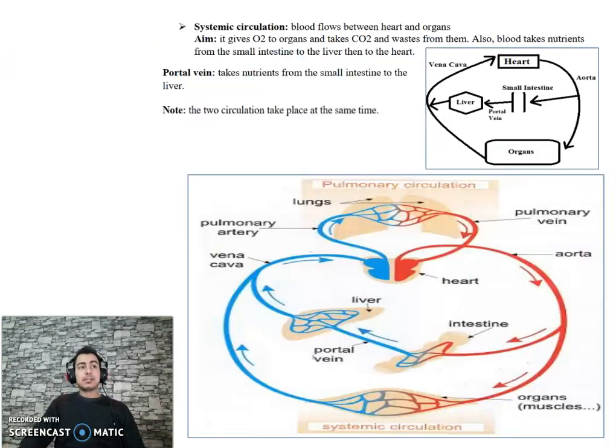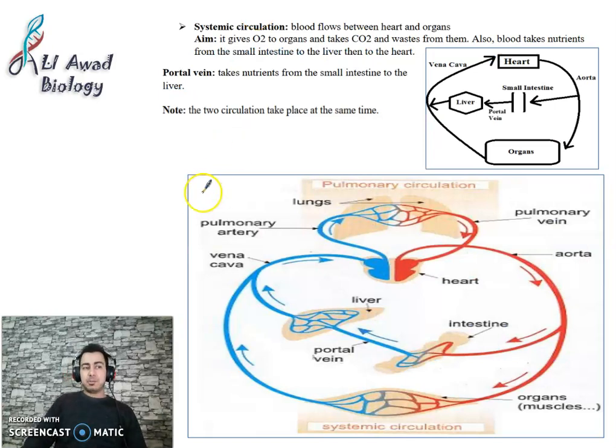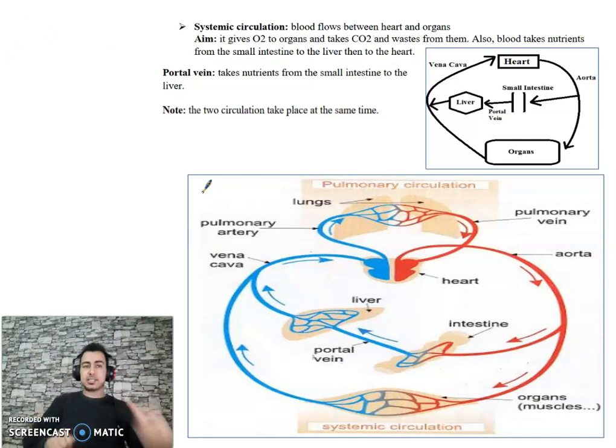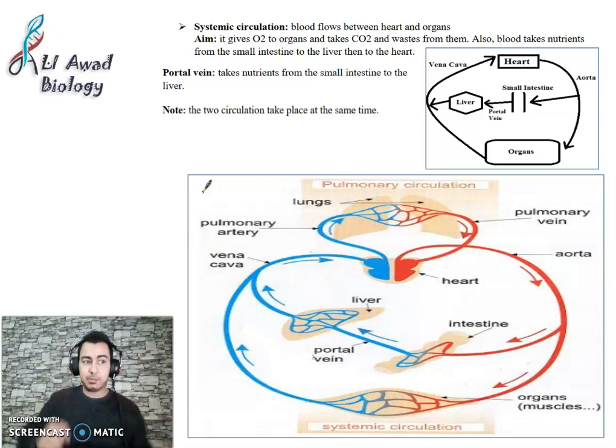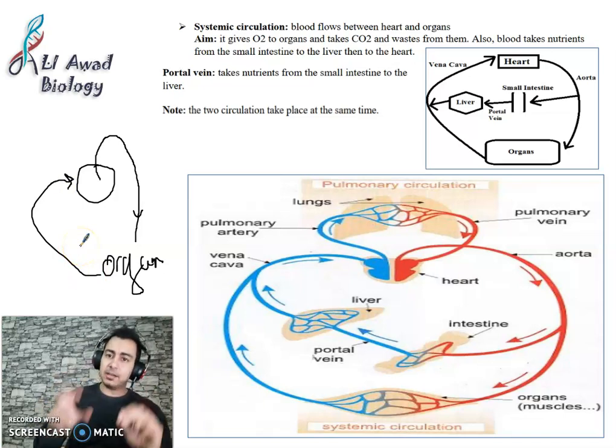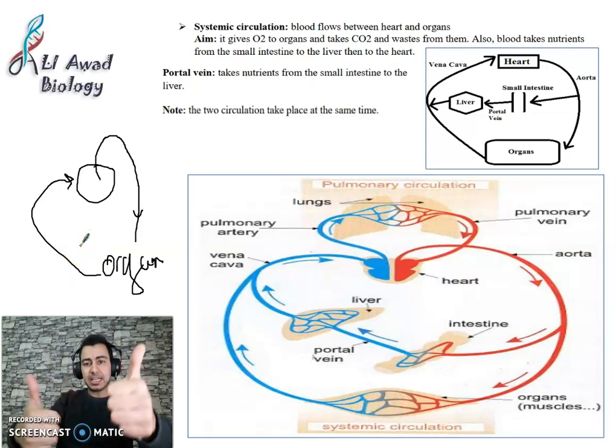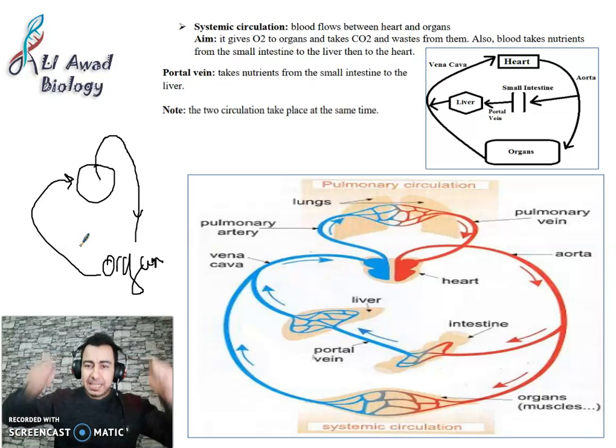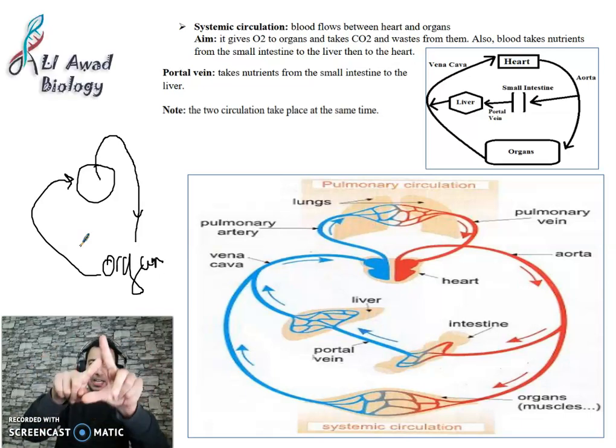The systemic circulation occurs between the heart inside and organs of the body, all organs of the body including the brain. This is the heart. Blood goes through the aorta vessel to organs. So this circulation occurs between heart and organs, and the two main vessels are aorta and vena cava.